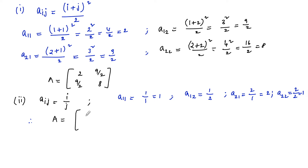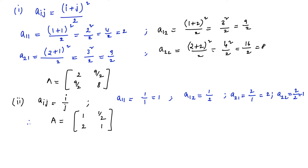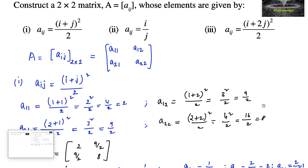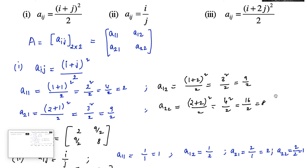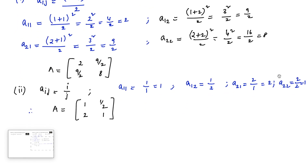Therefore the matrix A can be taken as: first element is 1, next 1 by 2, next 2, and the next one is 1. Now let's see the third one, where the element is given as (i plus 2j) whole square upon 2.